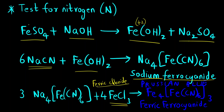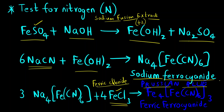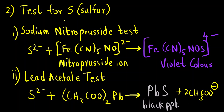We add ferrous sulfate, ferric chloride, and the sodium fusion extract together. At the end, we get a dark blue color called Prussian blue. This Prussian blue color is due to the complex Fe4[Fe(CN)6]3 — where the outer iron is Fe3+ (ferric) and the inner iron is Fe2+ (ferro). You must remember this formula and its Prussian blue color. That was the test for nitrogen.